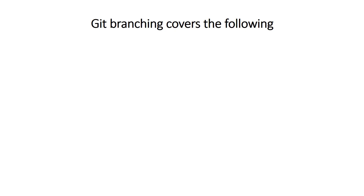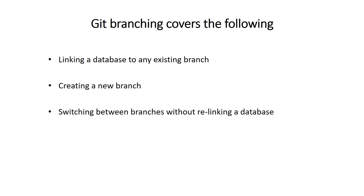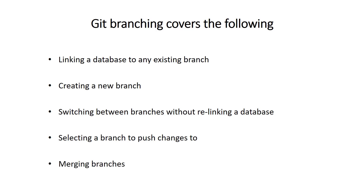Git branching implementation covers the following areas: linking a database to any existing branch, creating a new branch, switching between branches without relinking a database, selecting a branch to push changes to, and merging branches. All listed items are covered directly through SQL Server Management Studio.